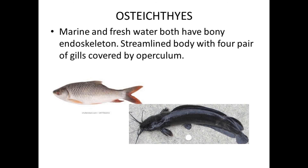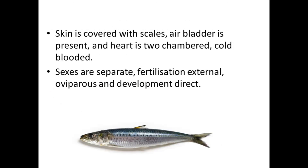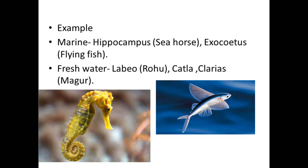Next class, Osteichthyes. They are marine and freshwater and have a bony endoskeleton. They have a streamlined body with four pairs of gills covered by operculum. Skin is covered with scales. Air bladder is present. Heart is two-chambered. Cold-blooded. Sexes are separate. Fertilization is external. Oviparous and development is direct. Examples include marine Hippocampus (sea horse), Exocoetus (flying fish), freshwater Labeo (rohu), Catla, Clarias.